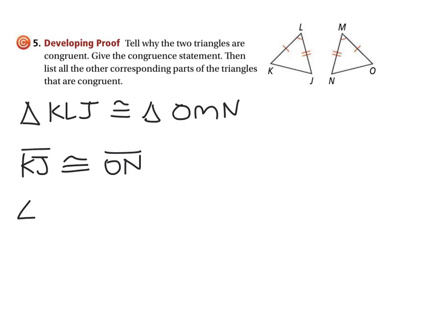And then we need to name the angles. We say angle K is congruent to, and what does it correspond with? It corresponds with angle O. Also, angle J is congruent to whatever it corresponds with, and it corresponds with angle N. Those are the three parts that were not explicitly named or explicitly shown to be congruent.